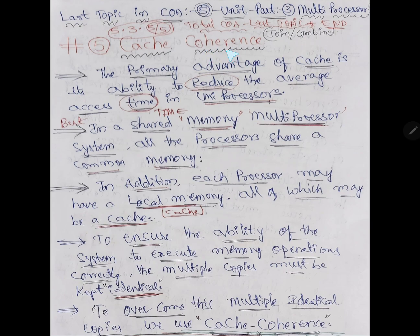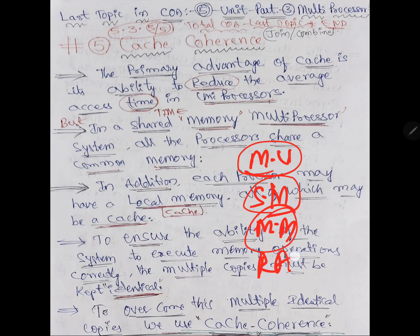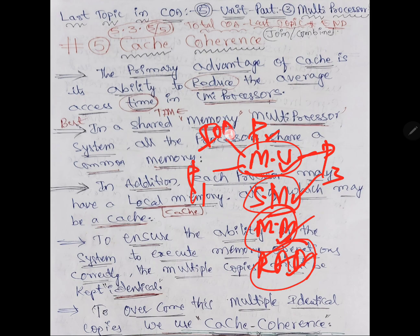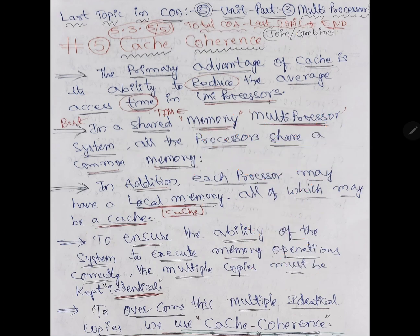Now cache coherence — one more word is added. Coherence means joining many cache memories together, because it is a multiprocessor with many processors, and every processor has its own cache memory. Memory unit is single — that is nothing but shared memory, or main memory, or RAM. This shared memory is connected to processor 1, processor 2, processor 3. In each processor we have cache 1, cache memory 2, cache memory 3. Joining all the cache memories together at one time is called coherence — that is called cache coherence.